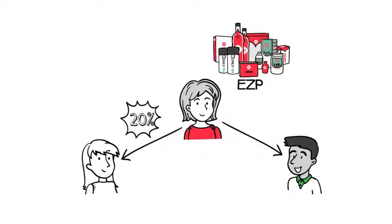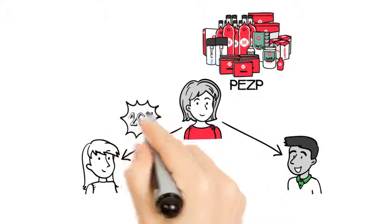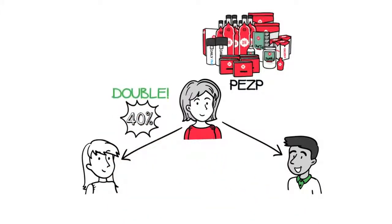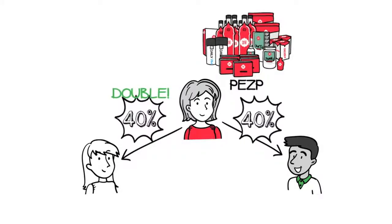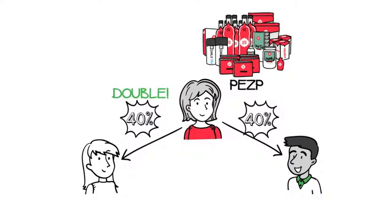Well, believe it or not, Nora was actually missing out. If she had started with a PEZP, she would have earned double. Yes, that's right, double the amount of money. That's a 40% bonus on every single initial order of each and every person you sponsor during your first four full weeks in the business.